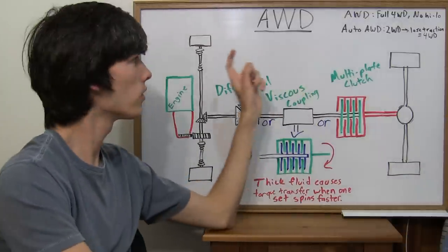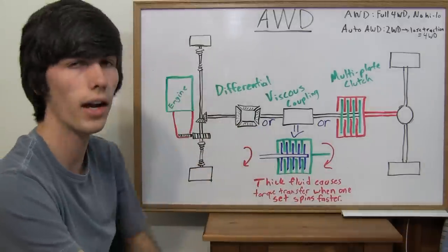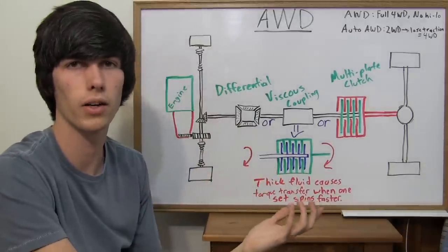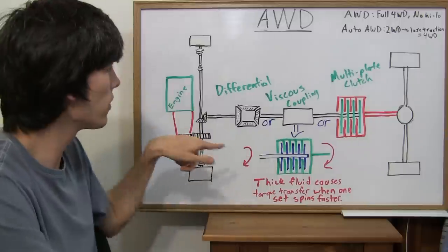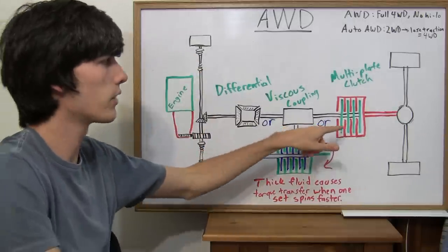So, your front tires start to spin. Now, you've got sensors for things like traction control, stability control, and ABS. You've got sensors in all your tires that are measuring how fast they're going. So, when your computer sees that these tires are spinning, it engages this clutch.